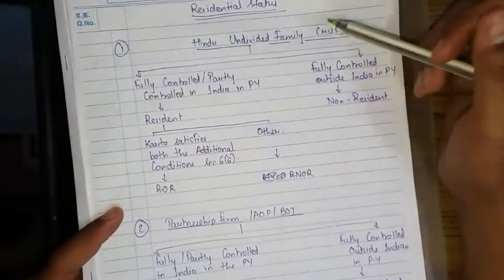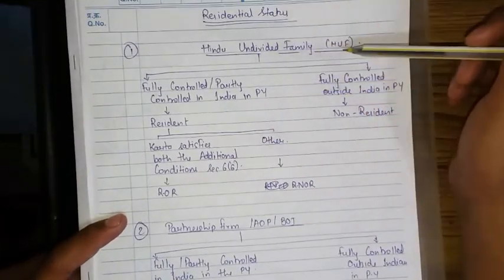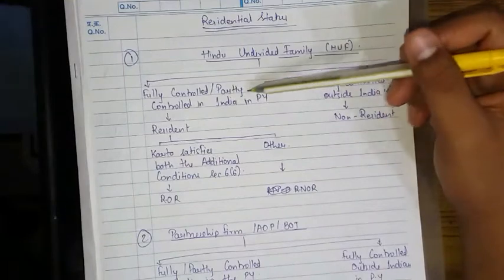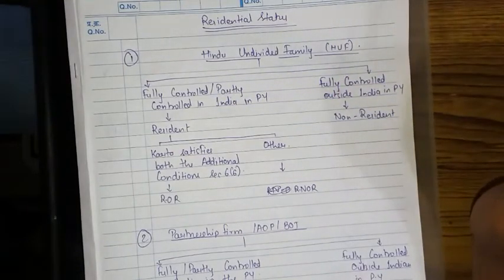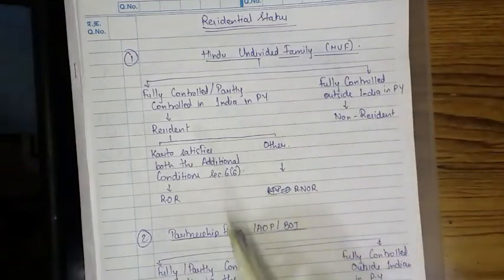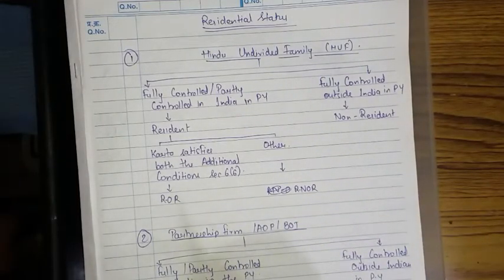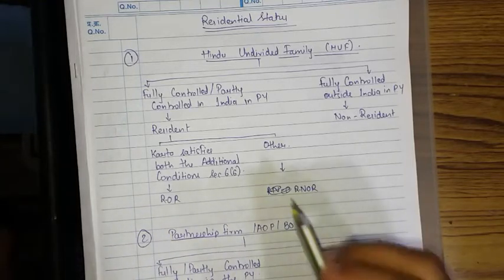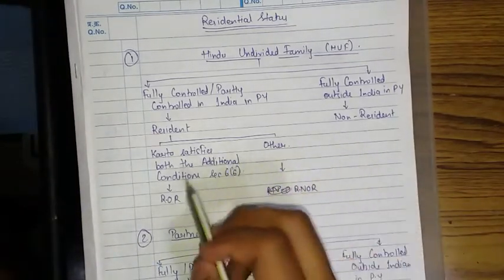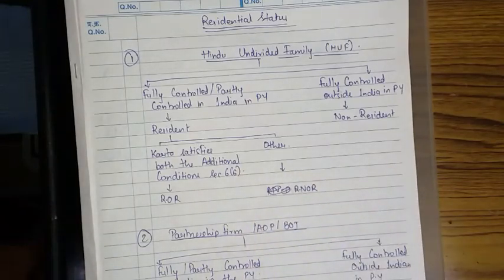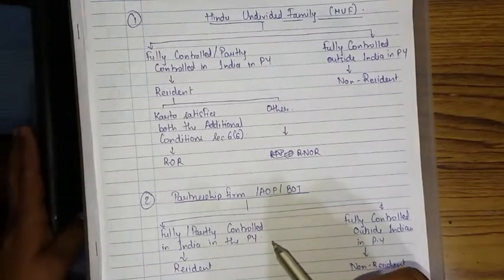Residential status of a Hindu Undivided Family (HUF): if the HUF is fully or partly controlled in India in the previous year, then the HUF is resident. If fully controlled outside India, it is non-resident. If resident, and the Karta satisfies both additional conditions under Section 6(6), the HUF is Resident Ordinary Resident; otherwise it is Resident Non-Ordinary Resident.